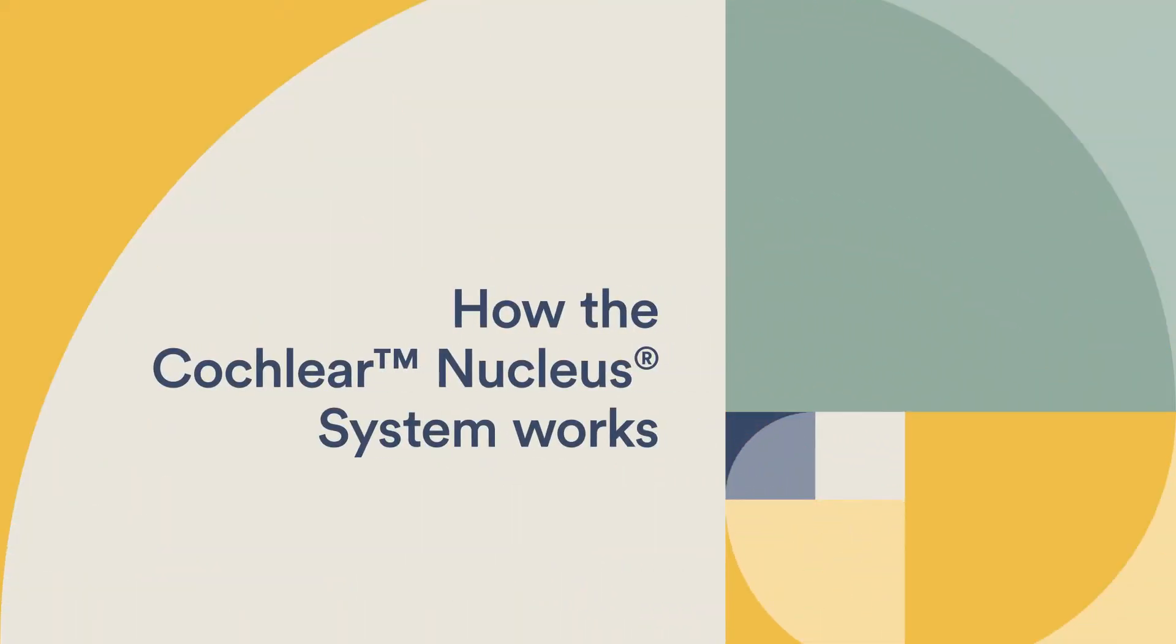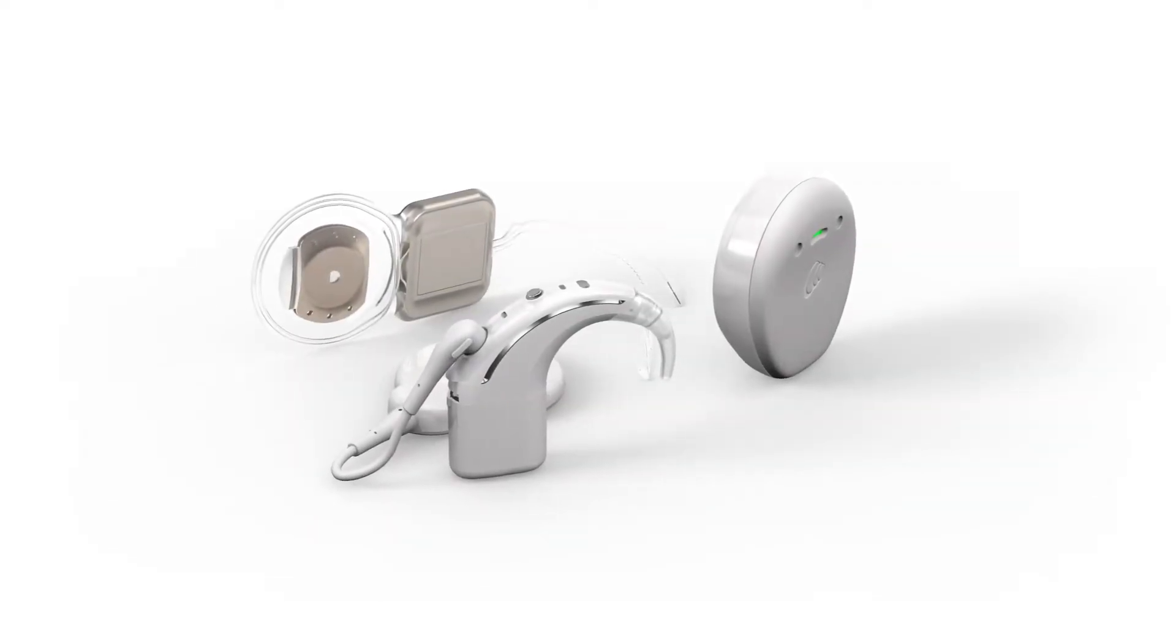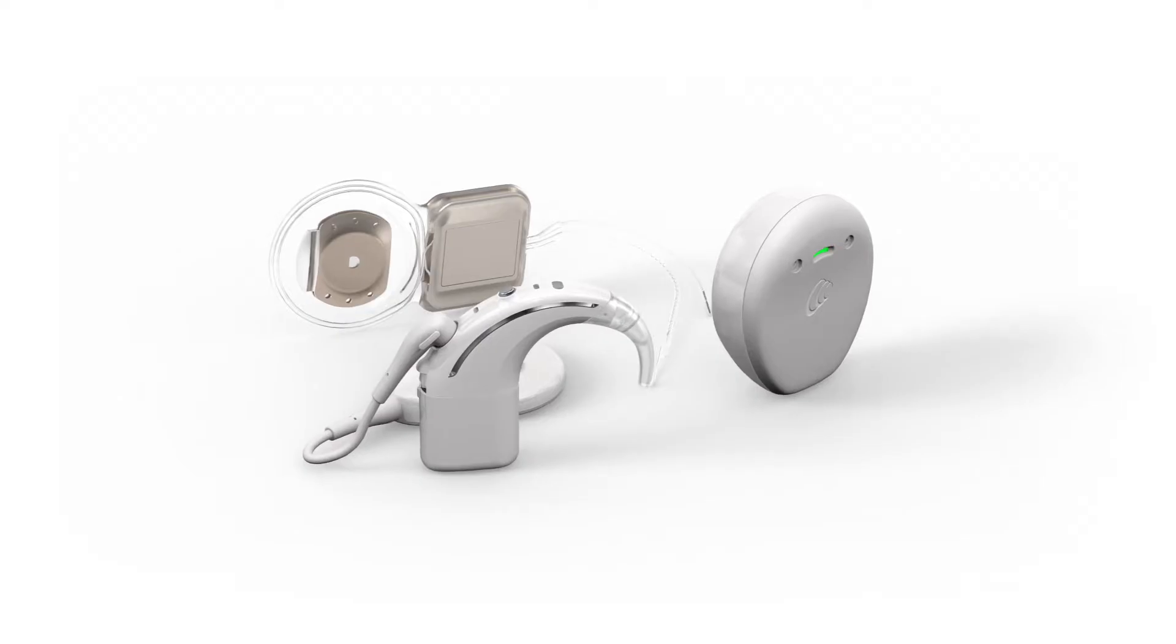How the Cochlear Nucleus System Works. The Cochlear Nucleus System replaces the parts of the inner ear that aren't working.